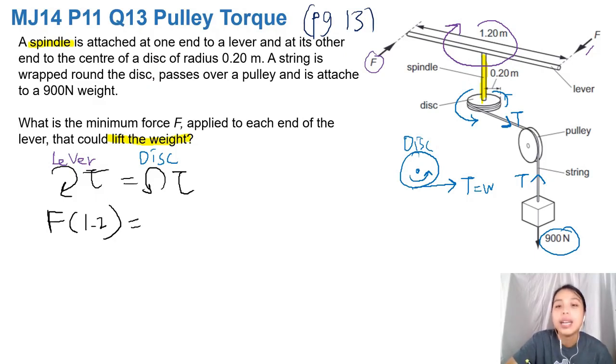Then from the disc, what is happening? We look at the mini picture that we draw here. What is the torque from that block? So we have tension times, how far is it from the pivot? Let's draw a dotted line. So that one is the radius of a circle, which is given to us 0.2 meters. So 0.2 meters.